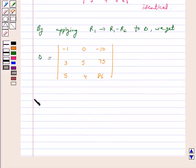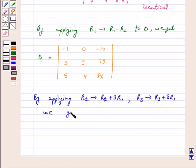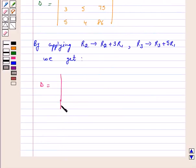Again, by applying R2 goes to R2 plus 3R1 and R3 goes to R3 plus 5R1, we get delta is equal to minus 1, 0, minus 10. Now, R2 goes to R2 plus 3R1, that is 3 plus minus 3, 0, 5, this is 4 5.